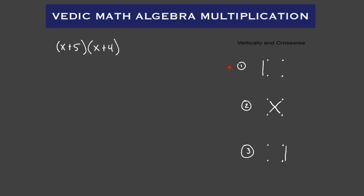So here's the first step, step number one, step number two, and step number three. Basically, what you're going to want to do is rewrite these as such, looking at them from top to bottom. What this vertically and crosswise pattern represents is each one of these dots are one of these terms. So you can see that this X is the top left dot on our pattern, and this top right dot on our pattern is this term here. So this is a visual representation of our operation.